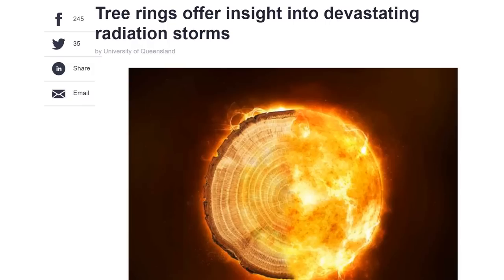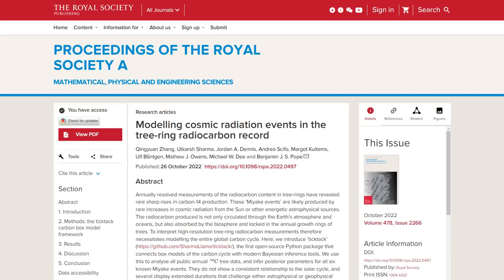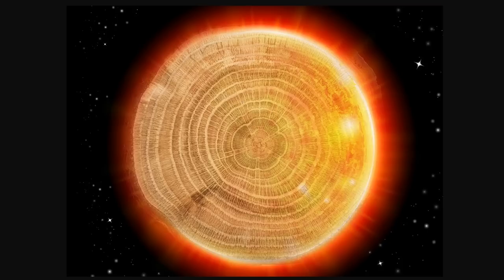Tree rings offer insight into devastating radiation storms and the implications for the destruction of the modern world. A University of Queensland study has shed new light on mysterious, unpredictable, and potentially devastating astrophysical events. A team led by Dr. Benjamin Pope from the University of Queensland School of Mathematics and Physics applied cutting-edge statistics to data from millennium-old trees to find out more about these radiation storms.